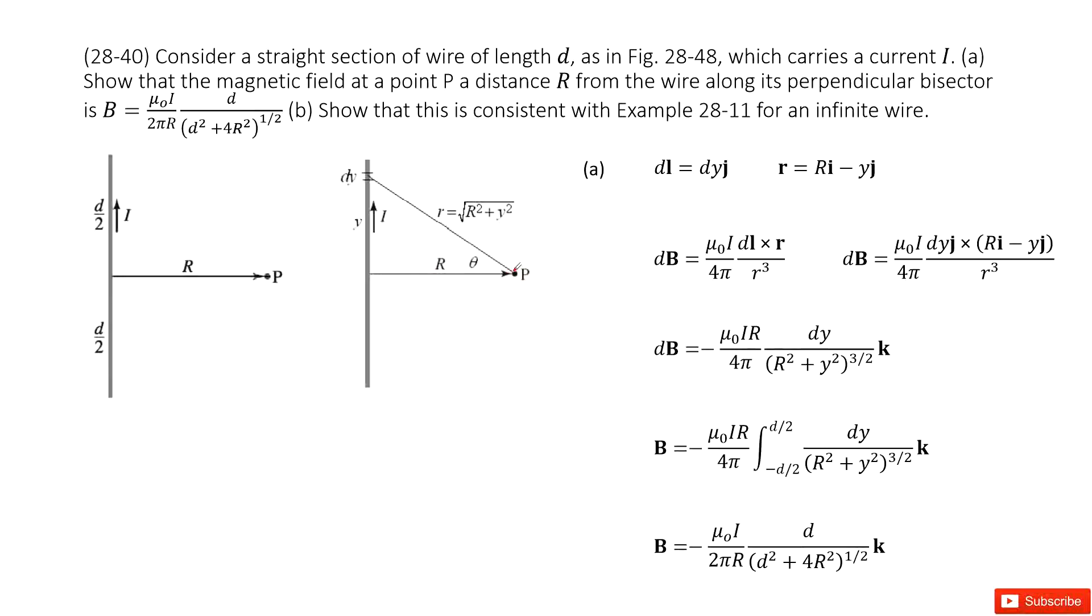We need to consider the Biot-Savart law. We cut the wire by small fractions. Now look at the small fraction dy. The magnetic field for dy at point P using Biot-Savart law is this one.